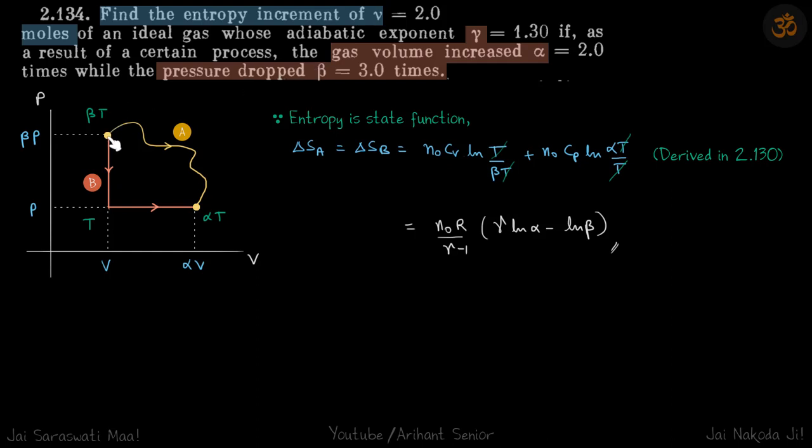So let's say it goes from here to here. Now it's said that in this process the gas pressure is dropped β times, so if this is P, this is P/β. And gas volume is increased α times, so if this is V, this is αV. So we need to find the entropy change in this process.